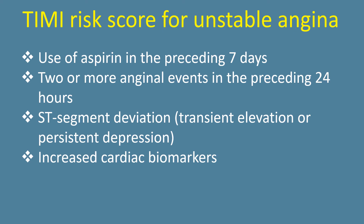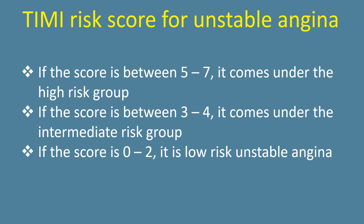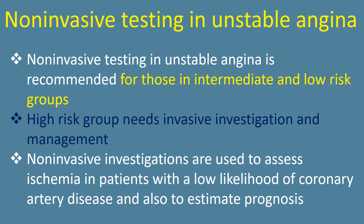Additional TIMI score criteria include ST segment deviation (transient elevation or persistent depression) and increased cardiac biomarkers. If the score is between 5-7, it is high risk. If the score is between 3-4, it is intermediate risk. If the score is 0-2, it is low risk unstable angina.